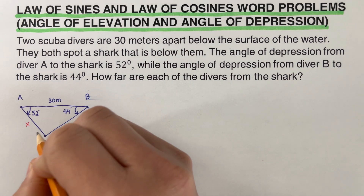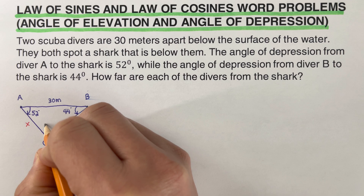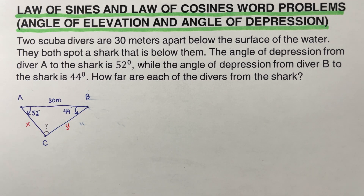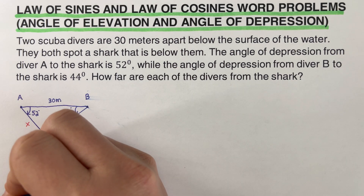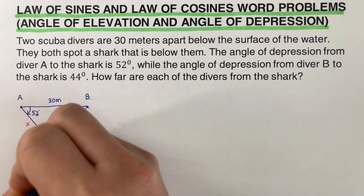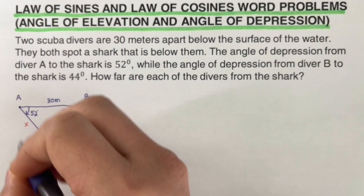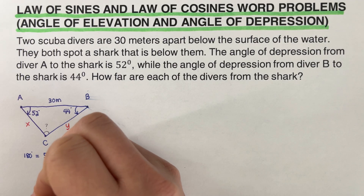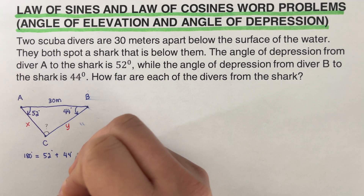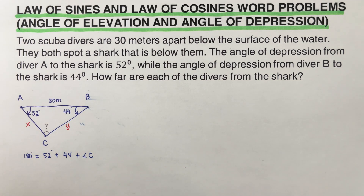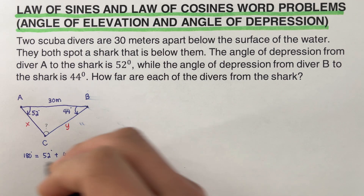We can solve for angle C using the fact that the total measure of angles inside a triangle is 180 degrees. So: 180 = 52 + 44 + angle C. Solving for C gives us angle C = 84 degrees.